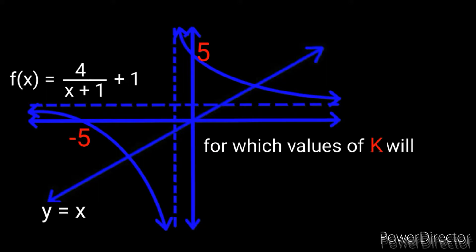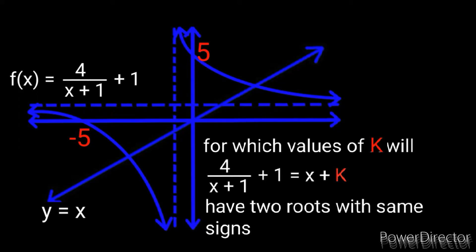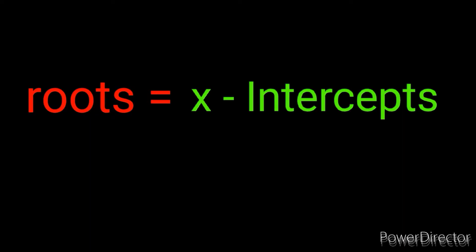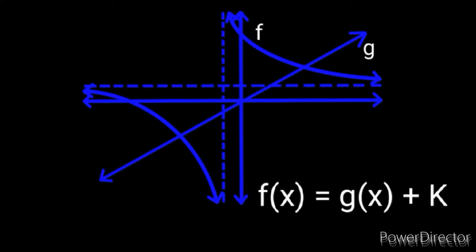You are asked: for which values of k will this equation have two roots with the same signs? Let me give you an understanding of roots. The real definition of roots is that roots are your x-intercepts. But when comparing two graphs, it is best to think of the roots as the points of intersection of the two graphs — you will never go wrong with that approach.